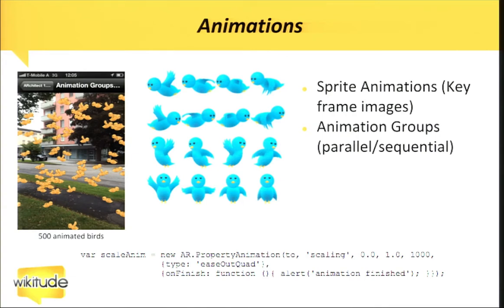We also have sprite animation, which is kind of the same as animated GIFs. Basically you have different keyframes and you can define in what order you want to animate those keyframes — for example, animating the top row here makes the bird start to flap. We've also added animation groups, which allow you to combine property animations into groups and have them executed in parallel or sequentially, which allows you to create more complex animations quite easily.